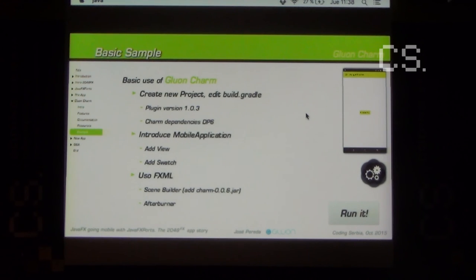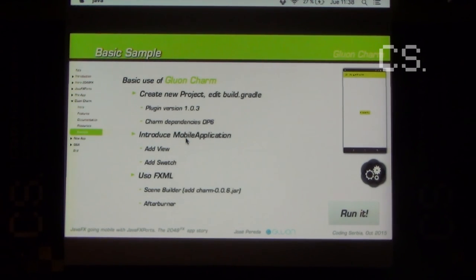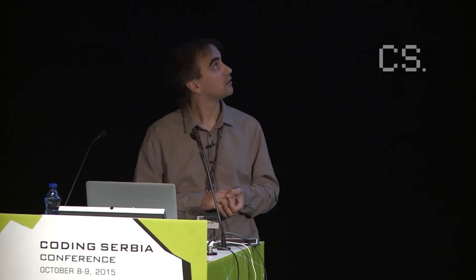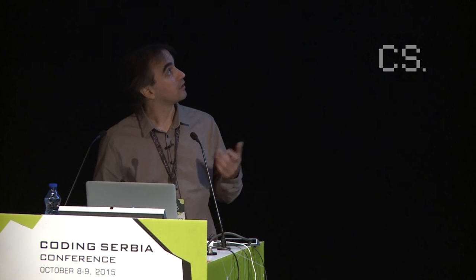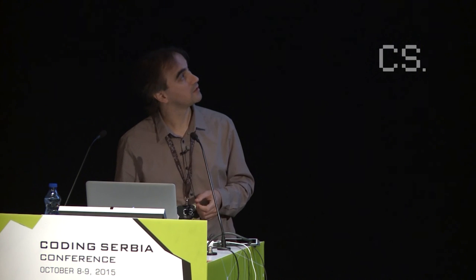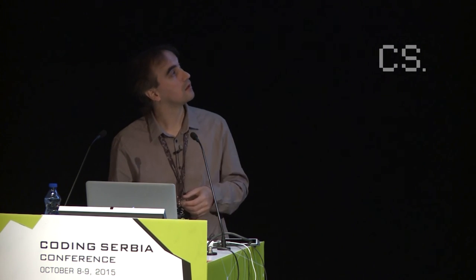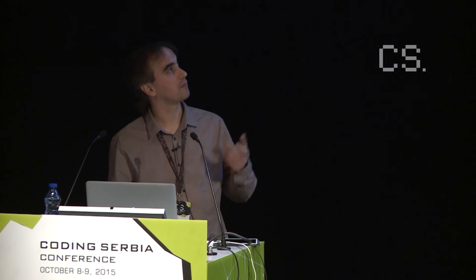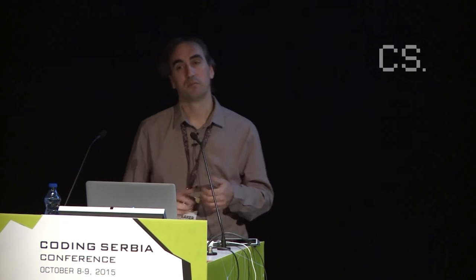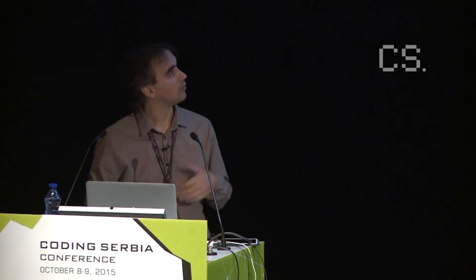To create a project using Gluon Charm, you just create a regular Gluon project, update the version, and insert the dependencies from the Nexus repo. We have custom layouts called views, and it's easy to switch between views — you don't have to deal with scenes and stages changing from one scene to another. We have a swatch for using material design guidelines. We have support for FXML for the graphical part using Scene Builder, or you can use the Afterburner framework.